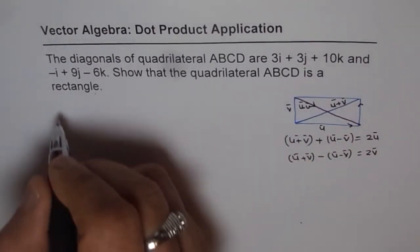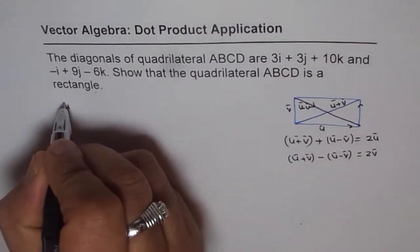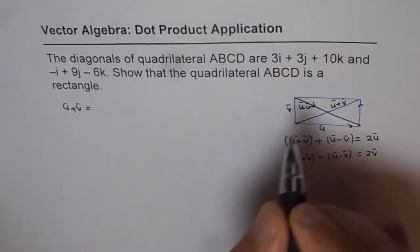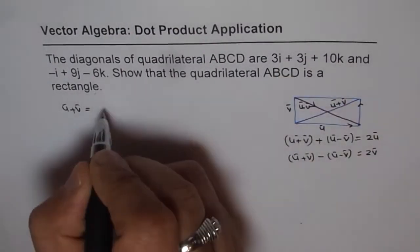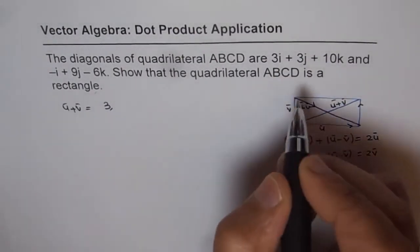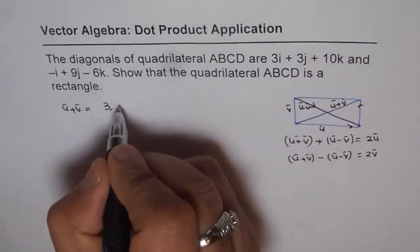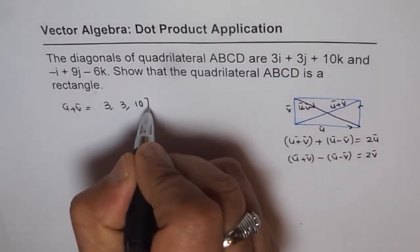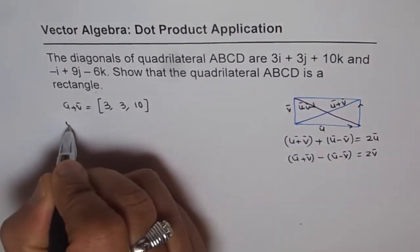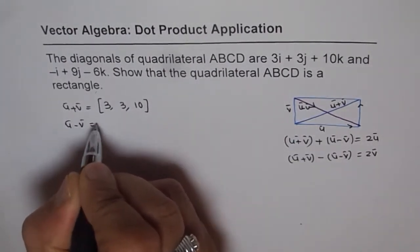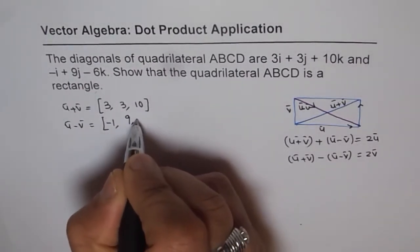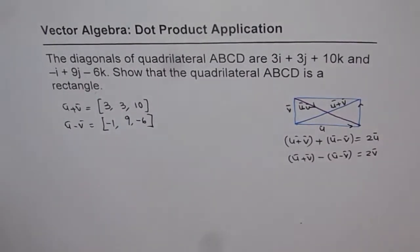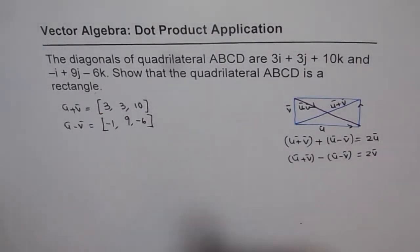We are given u + v equals one diagonal — we write it in component form as (3, 3, 10). And u - v equals the other diagonal, which is (-1, 9, -6).